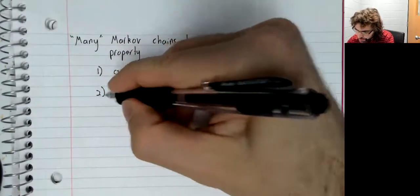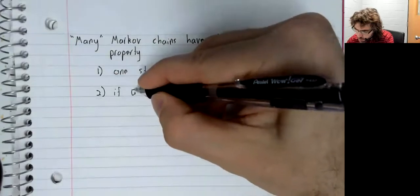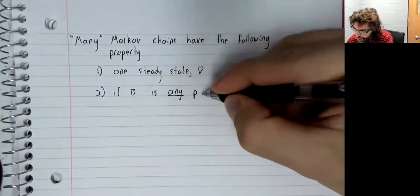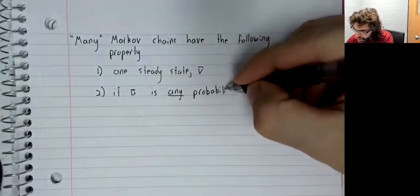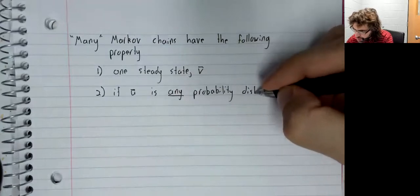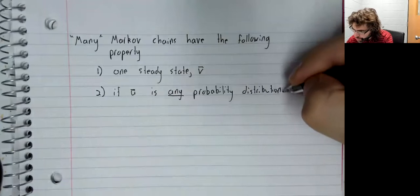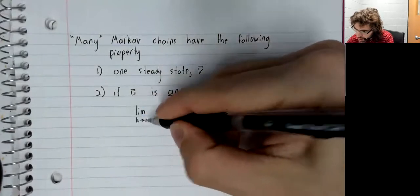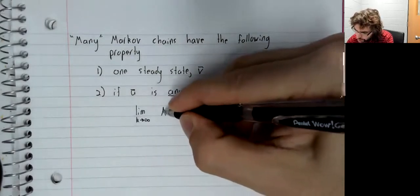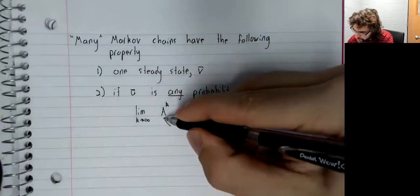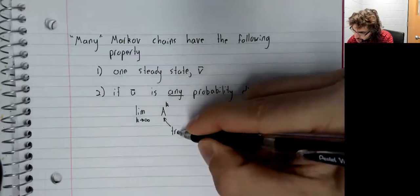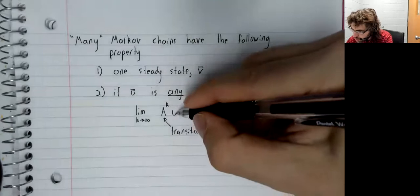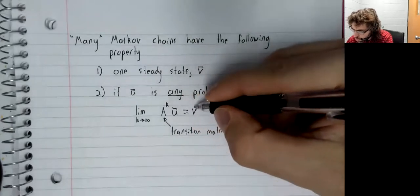Second, if u is any probability distribution, then the limit as k approaches infinity of a to the power of k, where a is the transition matrix times u, equals v.